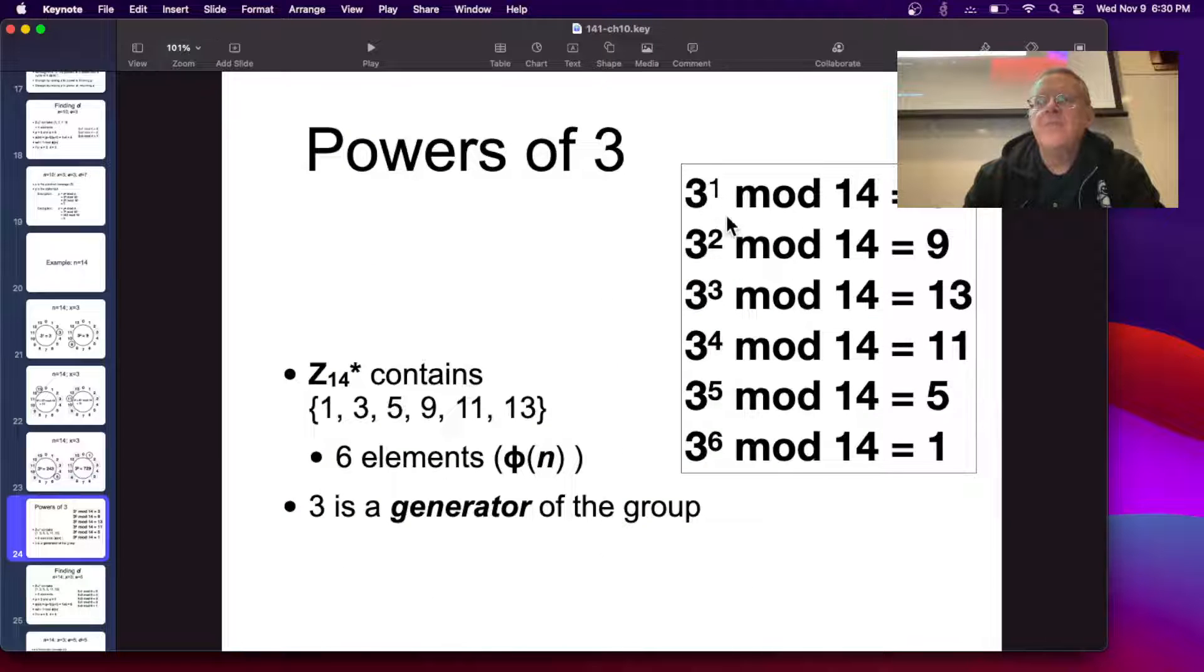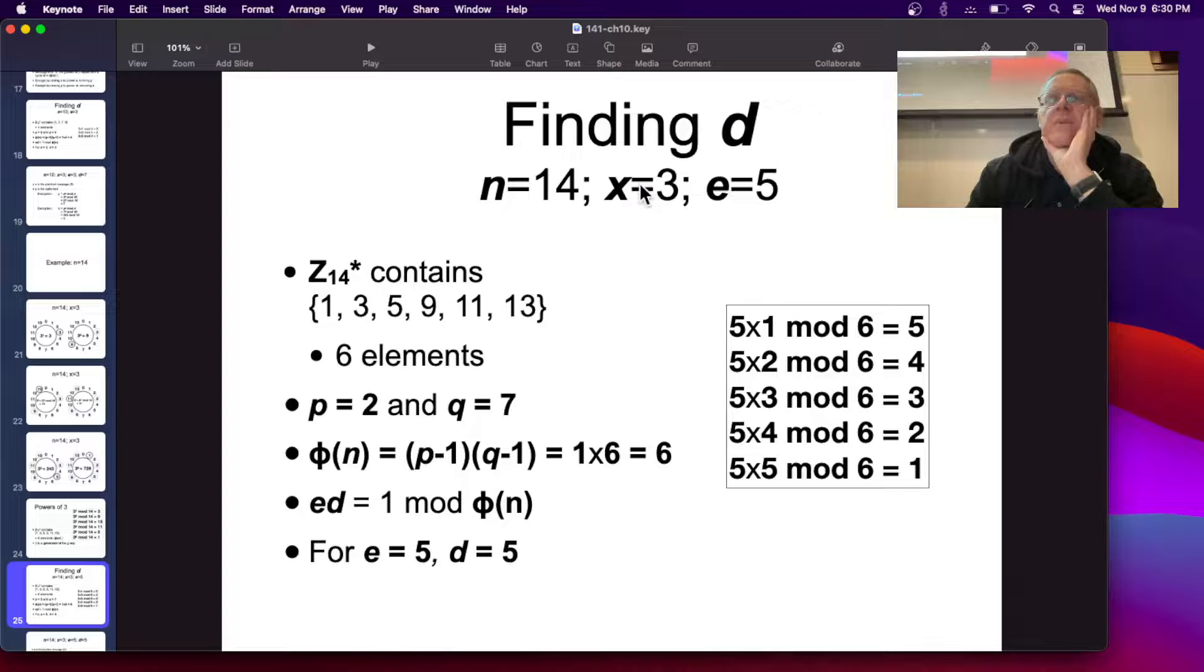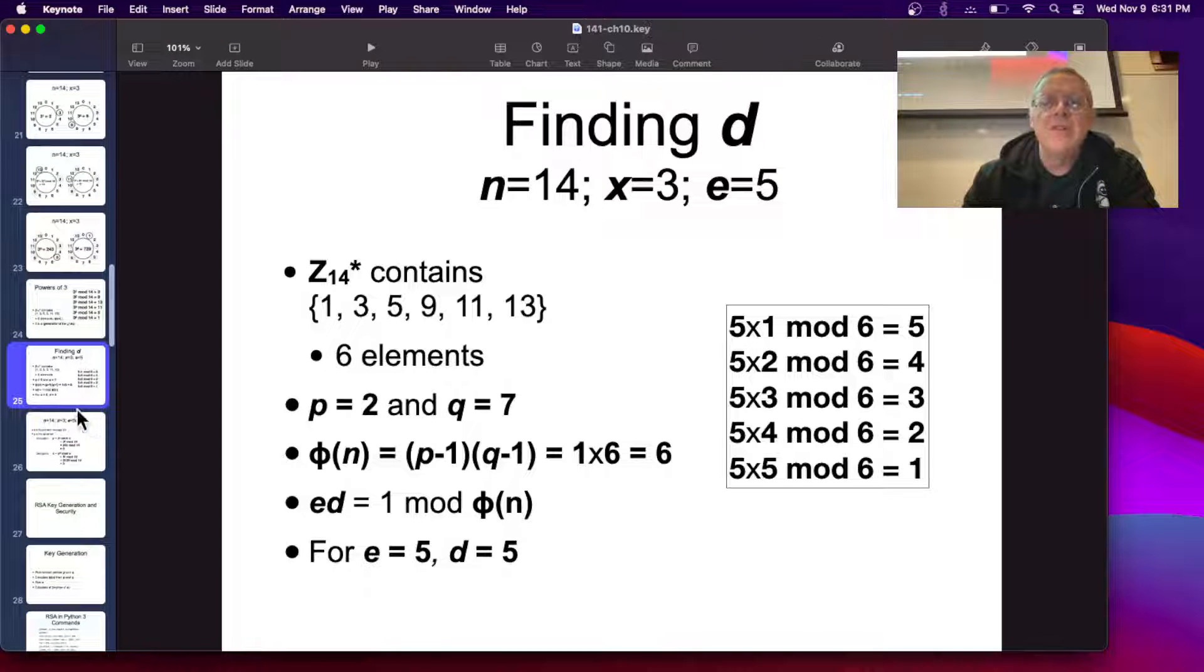So, here's the powers of 3, going up to 3 to the 6 being 1, and there's the pattern it goes through. So, 3 is the generator of the group, and there's the pattern of numbers. So now, if I want to encrypt a message of 3 with an encryption key of 5, then I would encrypt the message, and to find the decryption key, I have to find the D such that ED is 1 mod phi. The E is 5, and so I just try multiplying 5 by various numbers, and I find out that 5 times 5, mod 6 is 1, because it's 24 plus 1. So 5, again, is the decryption key as well as the encryption key. They aren't always the same, they just happen to be for these small number examples I've chosen here.